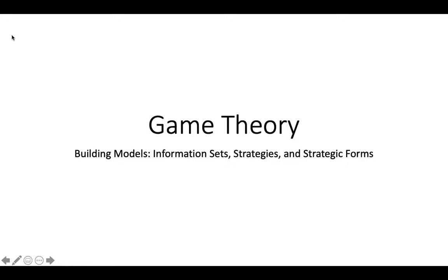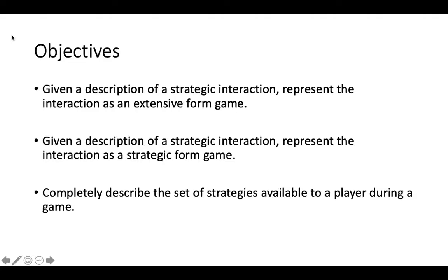In this video, we are going to explore how to incorporate simultaneous play into an extensive form game using an information set. We will also discuss the definition of a strategy and examine how to convert extensive form representations of a game into strategic forms. By the end of this video, you should be able to represent strategic interactions between two or more people as both extensive and strategic form games, and completely describe the set of strategies available to a player during a game.